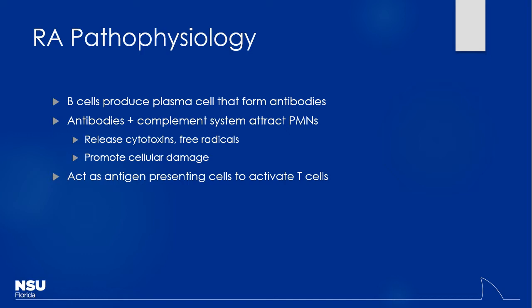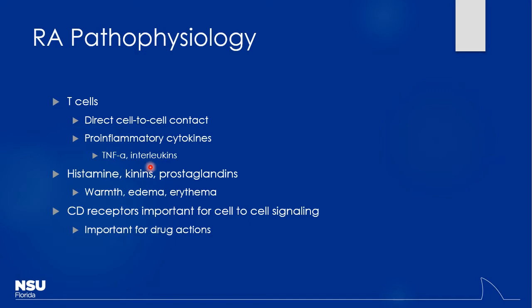By targeting different things like interleukin and tumor necrosis factor, we're going to be able to halt and arrest that inflammatory cascade, hopefully preventing further progression. It helps to decrease B cell and T cell activation, and the complement system is not going to be quite so activated. T cells are really important for TNF-alpha and interleukins — this is a big way we can specifically target T cell activation by using monoclonal antibodies.